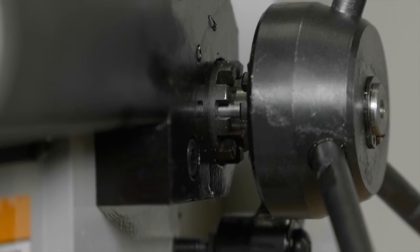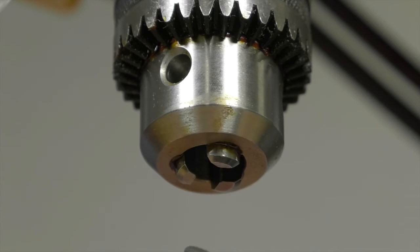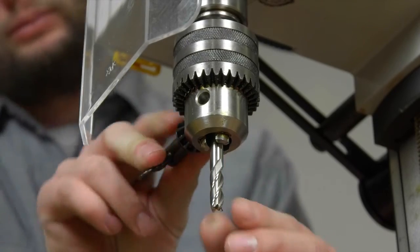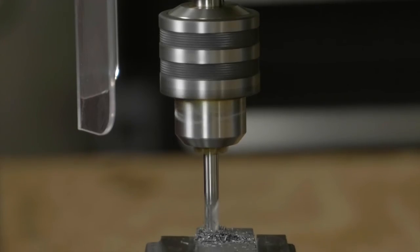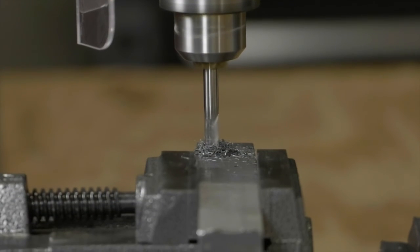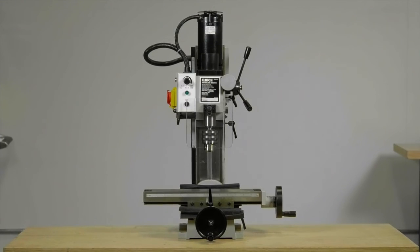It has a coarse down feed control for drilling and fine down feed control for accurate tool height setting. It has a half inch drilling capacity, a 5/8 inch end mill capacity, and a 1-3/16 inch face mill capacity. Get smooth power with this mini milling machine from Clutch.